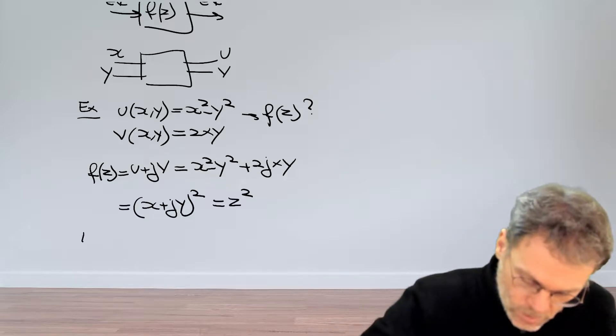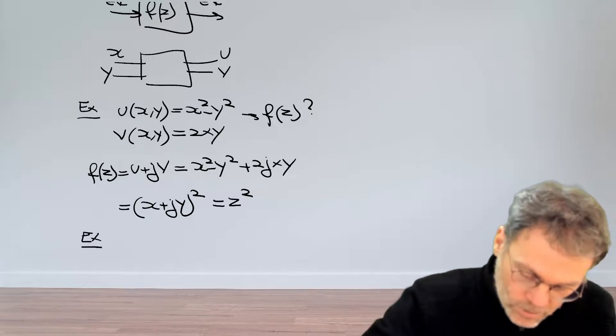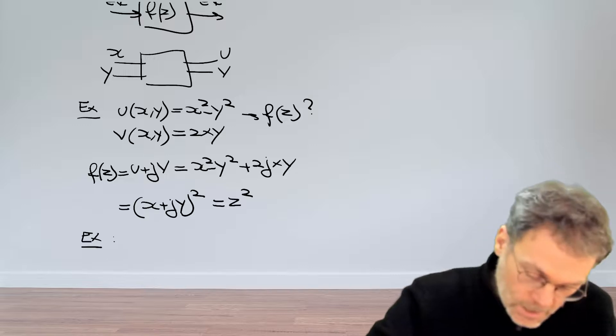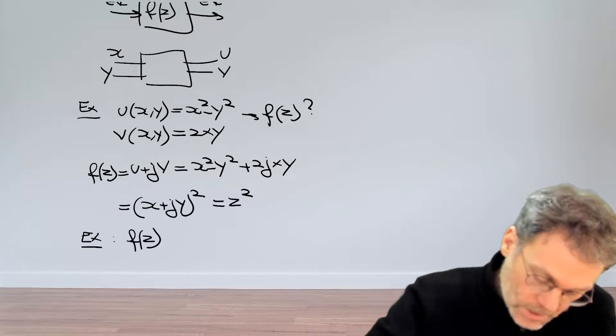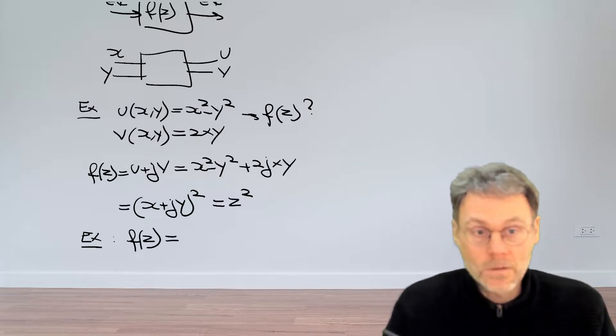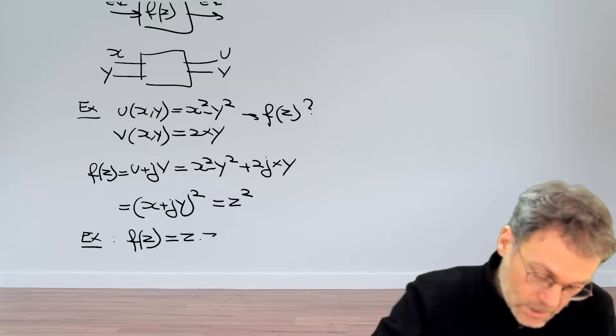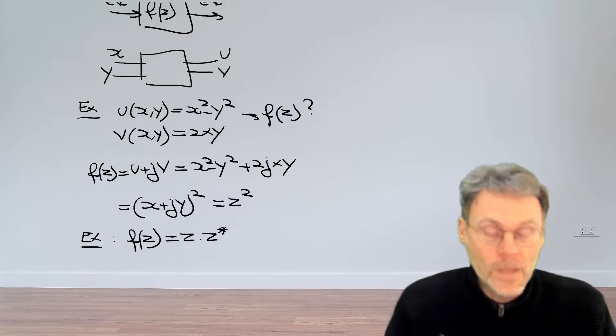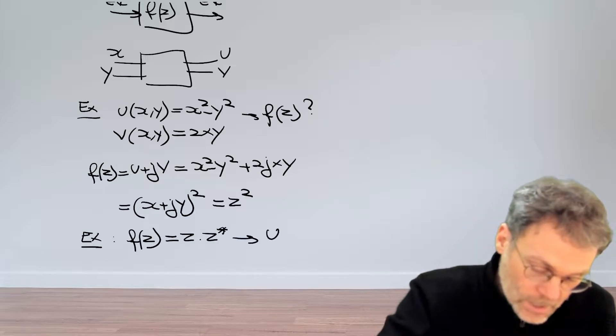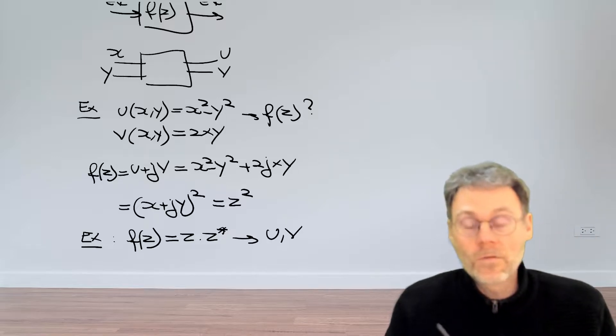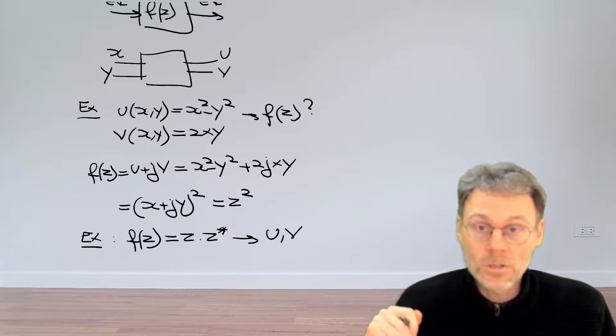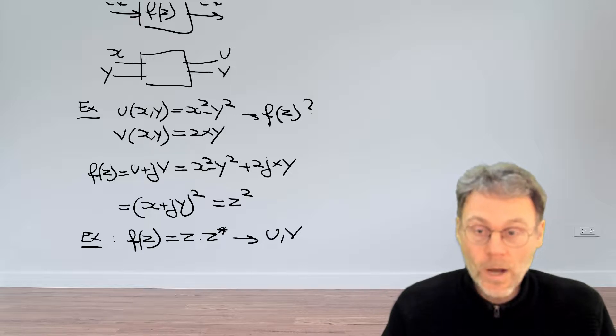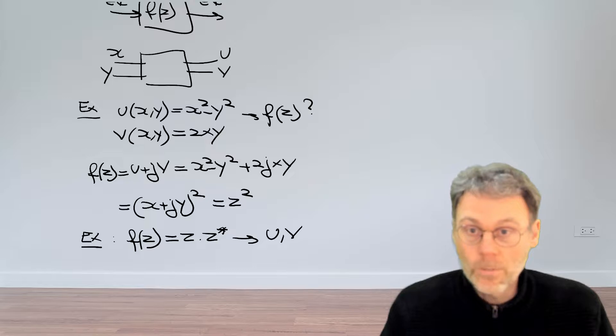Good, let's now do another example but let's move in the other direction. Let's say I give you a function f of z expressed in terms of complex variables, z times the complex conjugate of z. Can you write that down as u and v as two real valued functions of two real inputs x and y? Pause the video and do a couple of simple calculations to end up with a result.